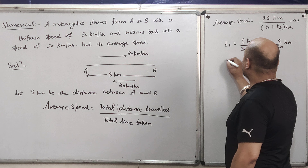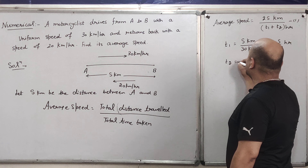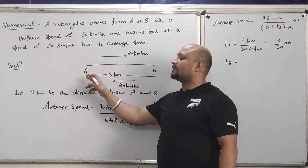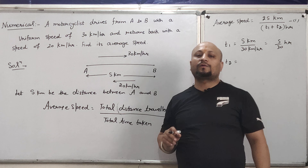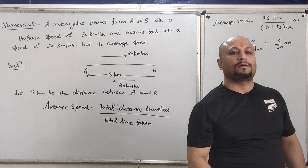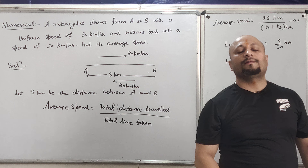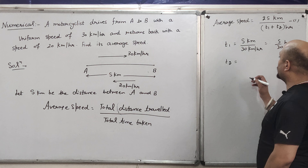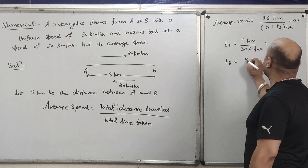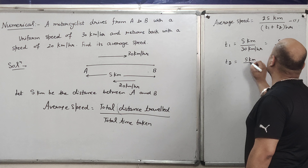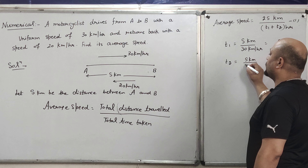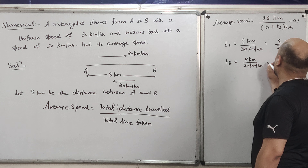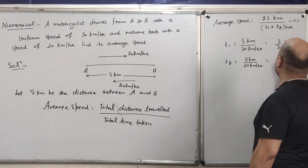Similarly, for T2: when the motorcyclist was traveling from B to A, the velocity was 20 km/hr. So T2 = distance / velocity = S km / 20 km/hr. Therefore T2 = S/20 hours.